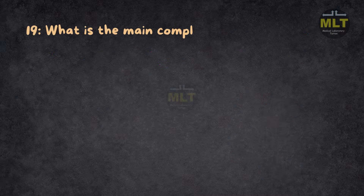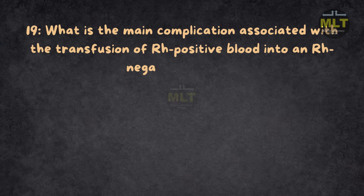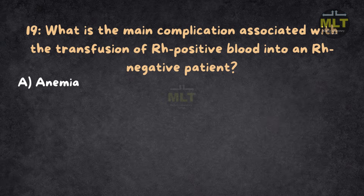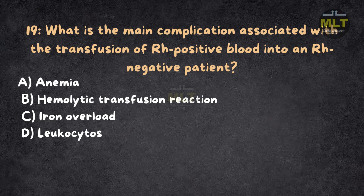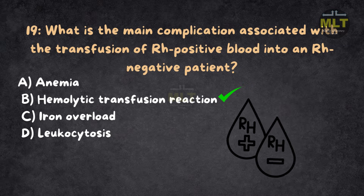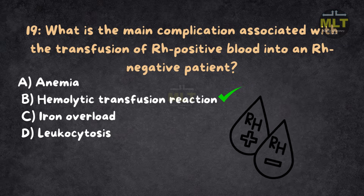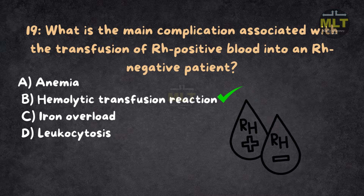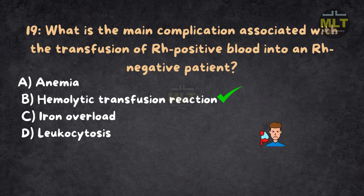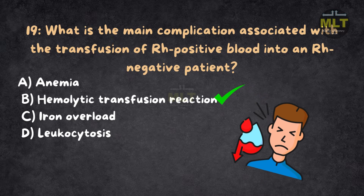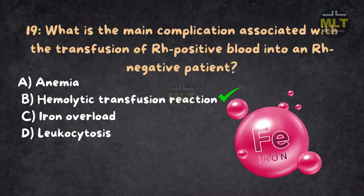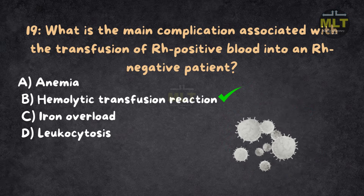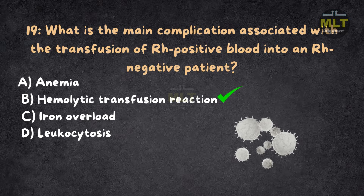Question 19: What is the main complication associated with the transfusion of RH-positive blood into an RH-negative patient? Option A: Anemia. Option B: Hemolytic transfusion reaction. Option C: Iron overload. Option D: Leukocytosis. Correct answer: B, hemolytic transfusion reaction. When RH-positive blood is transfused into an RH-negative patient, the immune system may react against the RH factor, causing a hemolytic transfusion reaction. Anemia results from blood loss or insufficient red blood cells, not a transfusion reaction. Iron overload can occur from multiple transfusions but is not a direct result of RH incompatibility. Leukocytosis refers to an increase in white blood cells, not a transfusion issue.